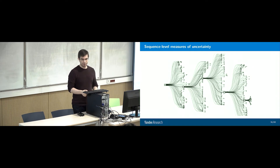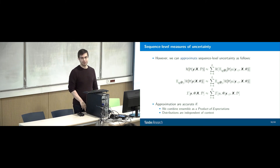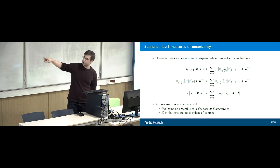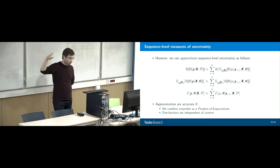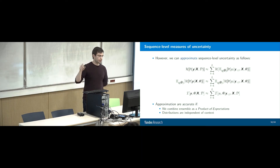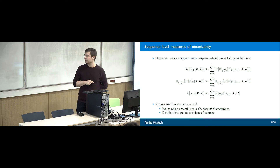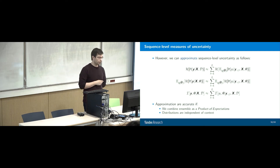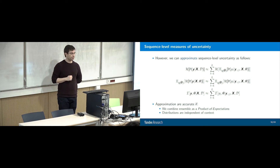We can use approximations — really simple, crude approximations: just approximate sequence-level measures as sums of token-level uncertainties. You can show that the entropy of the sequence-level predicted posterior is approximately the sum of token-level entropies. The expected entropy is also approximately the sum of token-level expected entropies. And mutual information can also be approximately the sum of token-level mutual information, but under two conditions: first, that we combine the ensemble as a product of expectations — which turns out to be better anyway — and second, that distributions are independent of context Y less than L, which is obviously strongly violated except for non-autoregressive models.